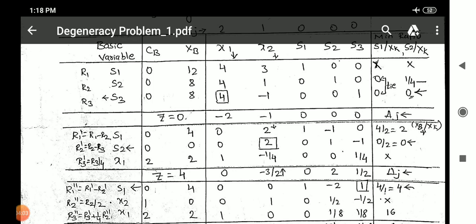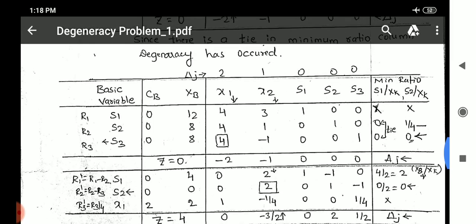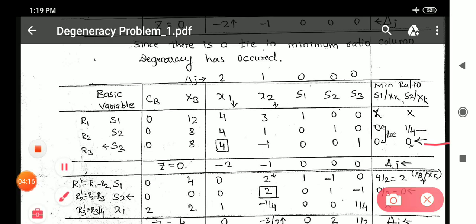But one more thing to observe here is, once you break the tie in this step, say you have broken tie and you have got minimum value for third row here. Now, once this is done, if you observe the formula for subsequent steps, that is for minimum ratio, it has been changed again. It is written as xb divided by xk.